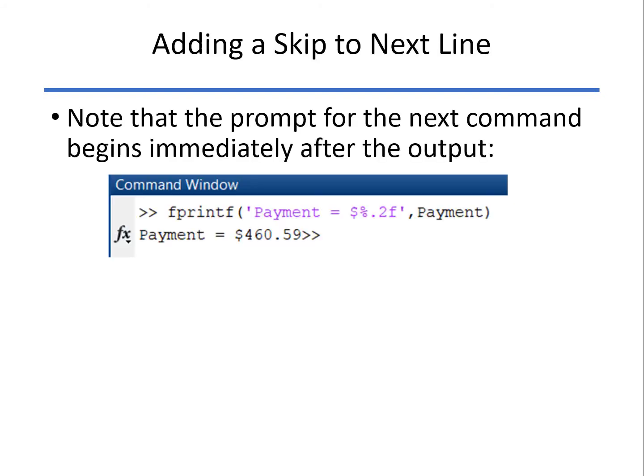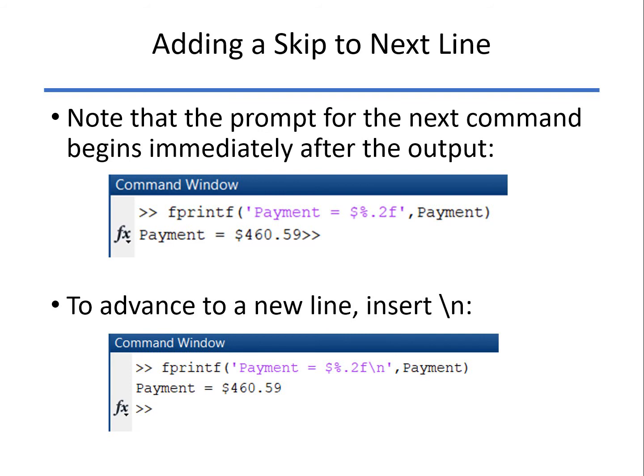If we want to skip to the next line, then we would add a backslash n into that. So you can see, once we've done that, the prompt for the next command, instead of coming right after the line with payment on it, will skip down to the next line. So that's all done within the single quotes, the backslash n.